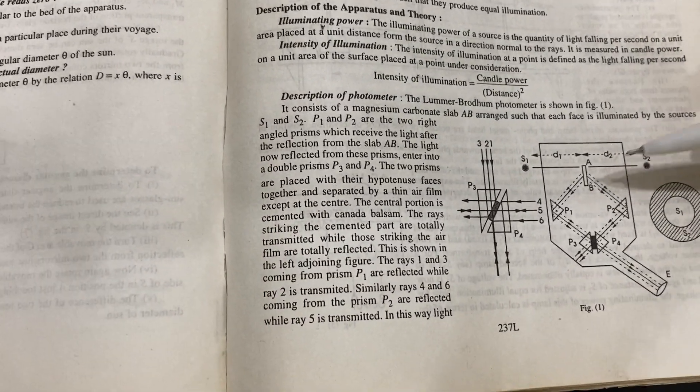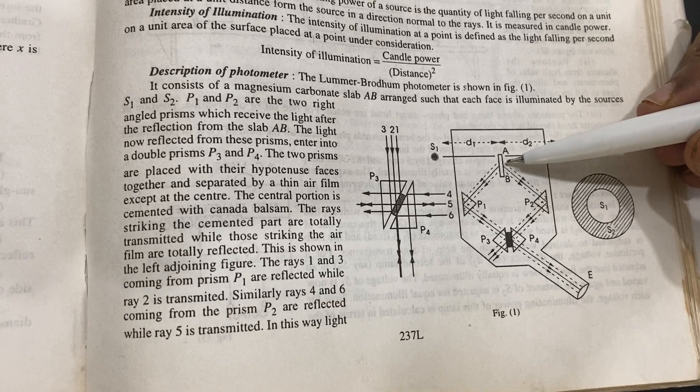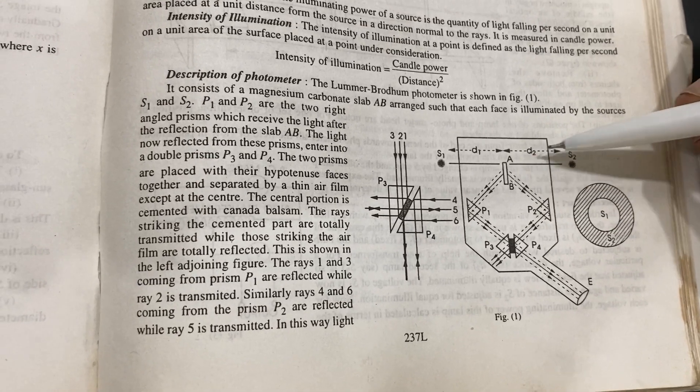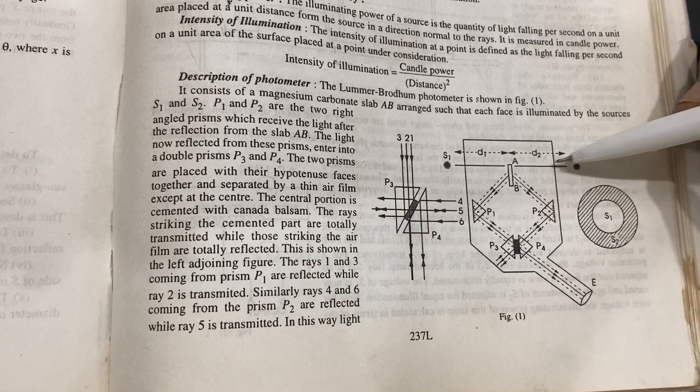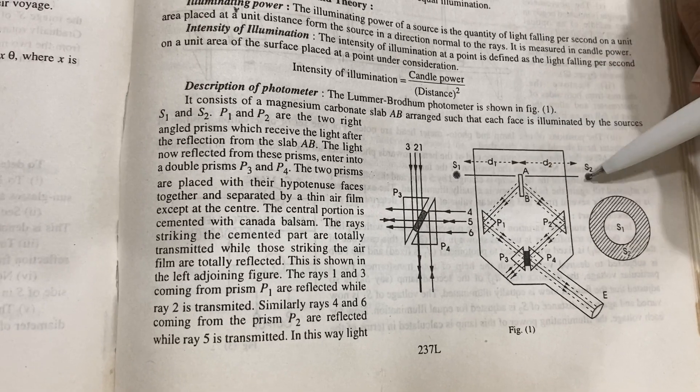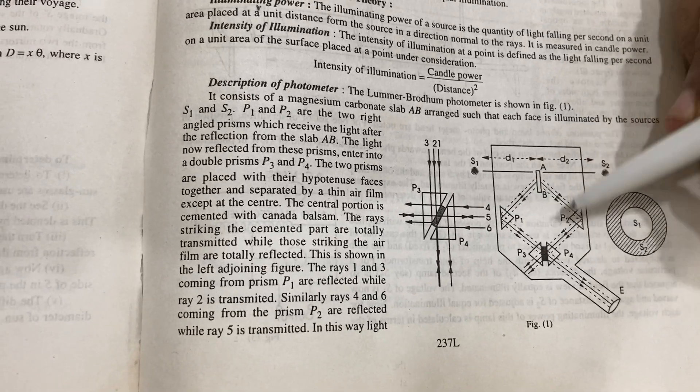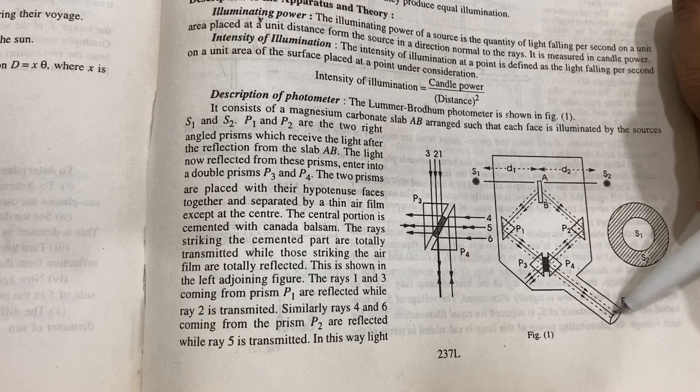Now let me tell you the theory. There is one plate which is white on both sides. When the light falls from source 1 and source 2, they will be reflected and then it will go through the eyepiece.